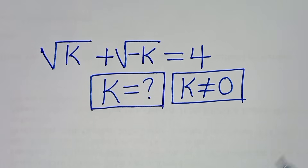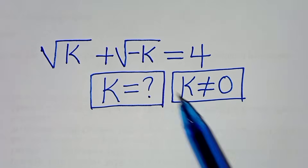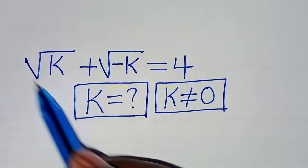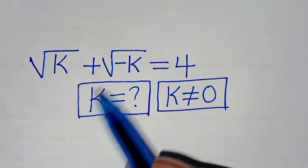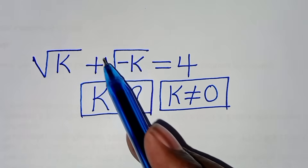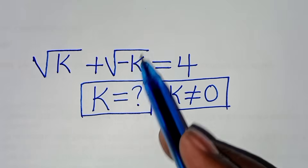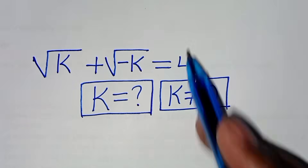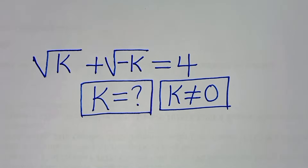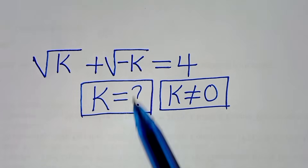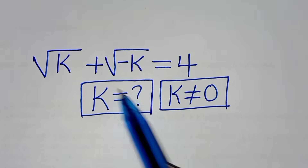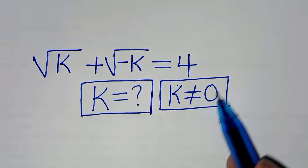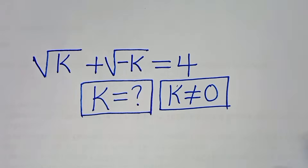Hello everyone, you are welcome to solve this nice algebra problem, which is the square root of k plus square root of minus k, this is equal to 4. So what are the values of k, given that k is not equal to 0?